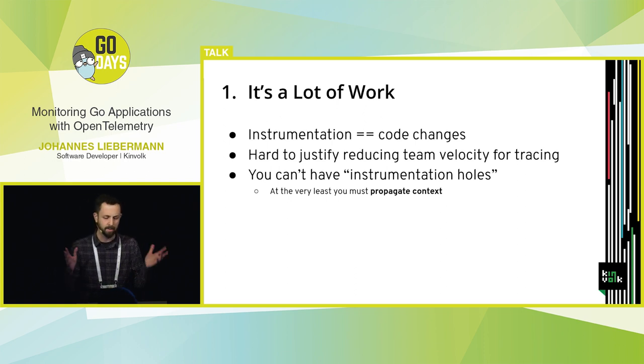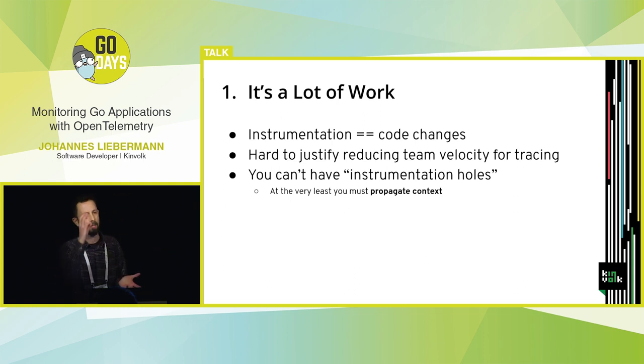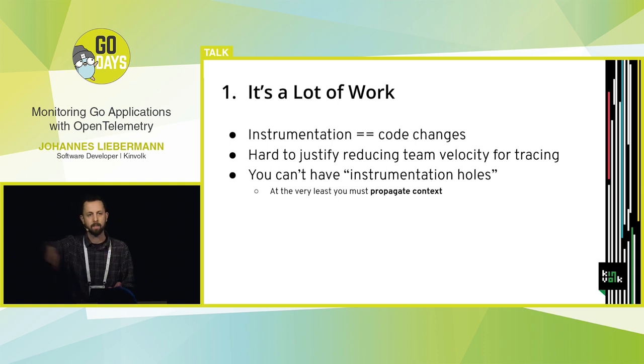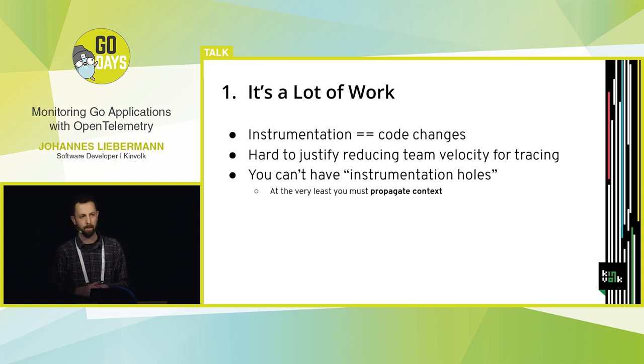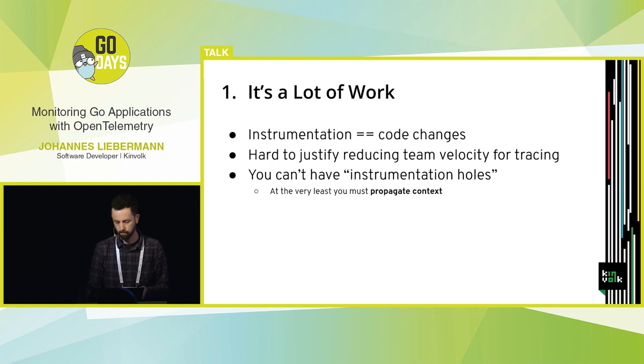You cannot have instrumentation holes. At the very least, even if you don't care about capturing spans, you must propagate context in order for a trace not to break. We'll talk about context a little bit later.